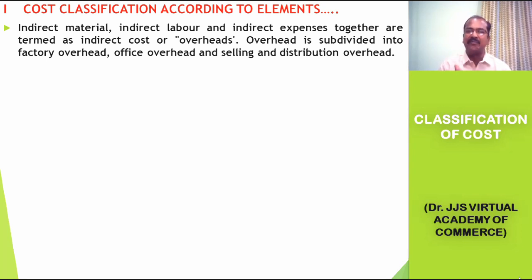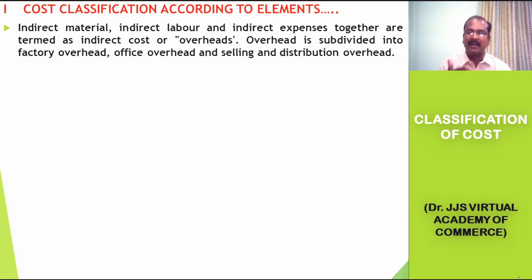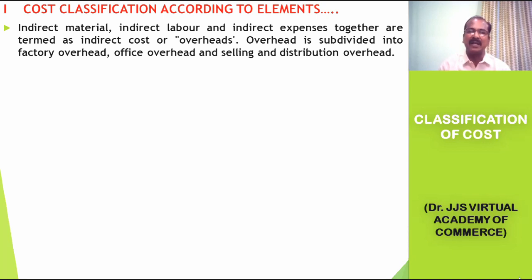The subdivision of overhead depends upon the stage where the indirect expenditure is incurred. We could identify it as either related with the factory, related with the office and administration, or related with selling and distribution activity.